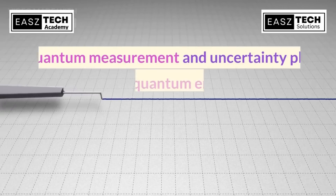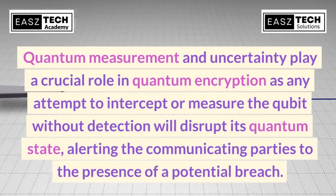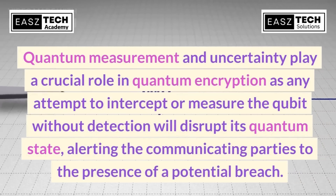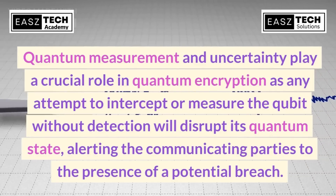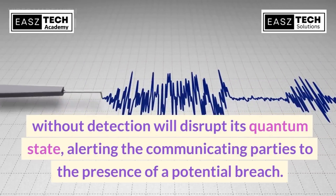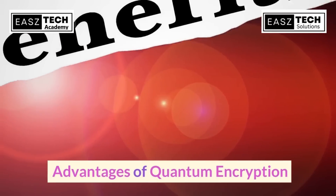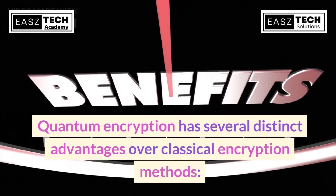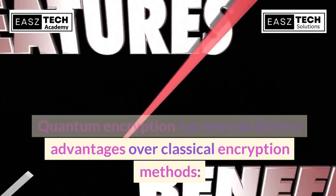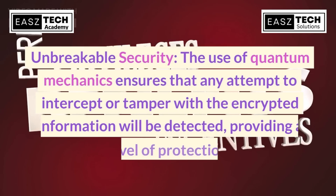Quantum measurement and uncertainty play a crucial role in quantum encryption, as any attempt to intercept or measure the qubit without detection will disrupt its quantum state, alerting the communicating parties to the presence of a potential breach.